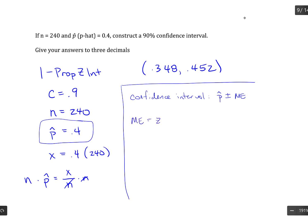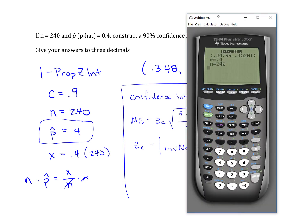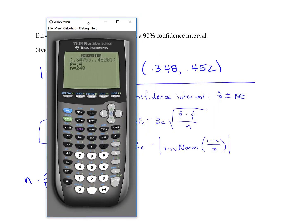So the margin of error is z sub c, so a critical value based off of your level of confidence, times the square root of p-hat times q-hat divided by n. So this z sub c, it's a formula that's good to know. It's the absolute value of inverse norm of 1 minus your level of confidence divided by 2. And you can do most of this in your calculator, so let's find that value in the calculator.